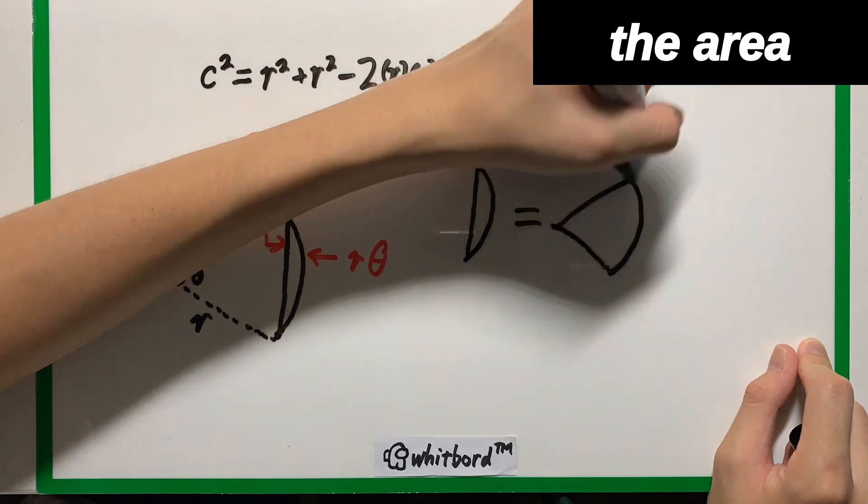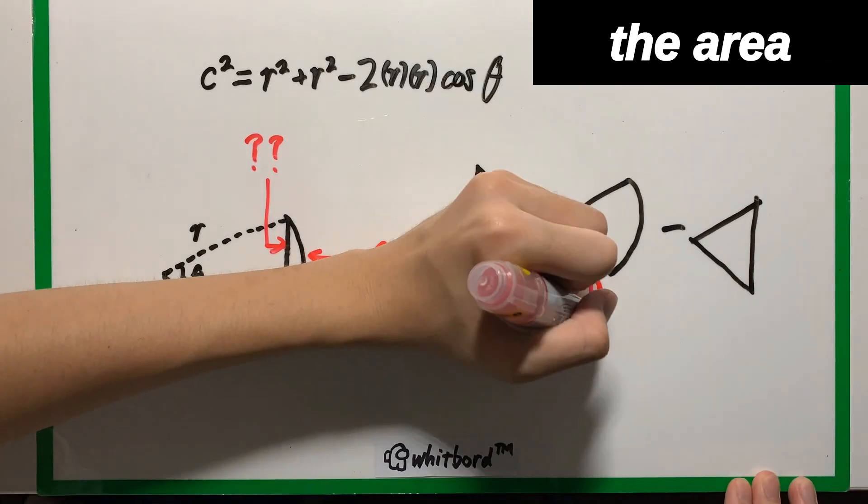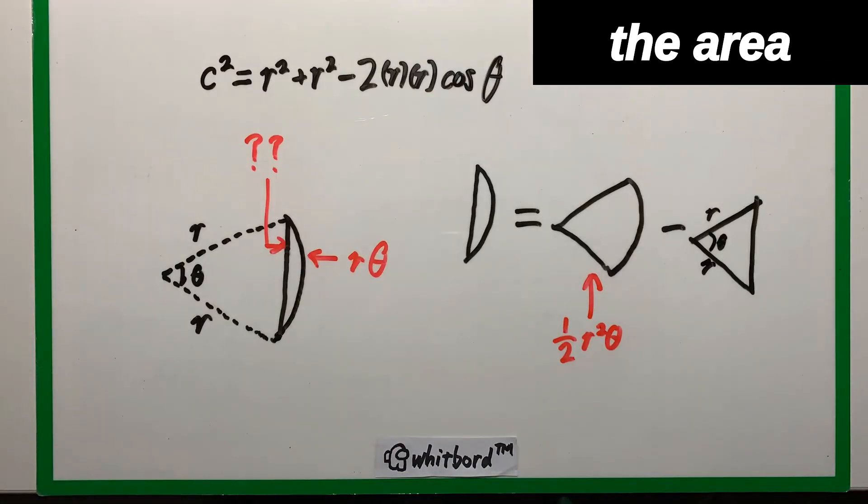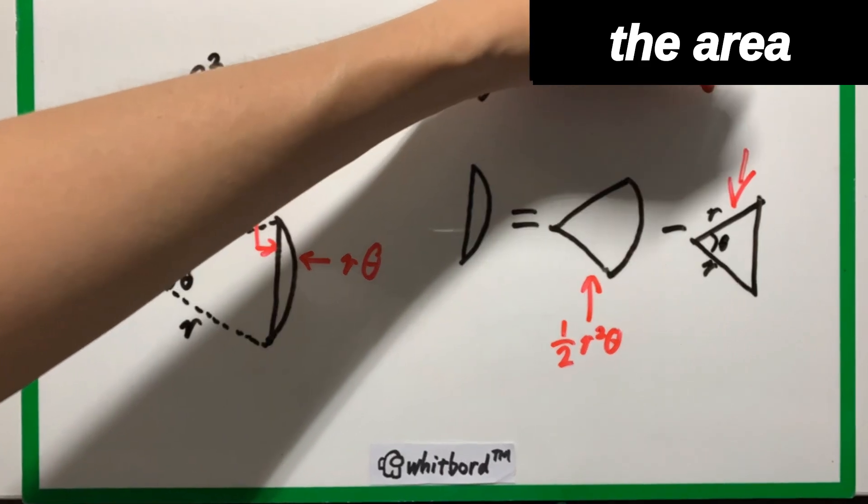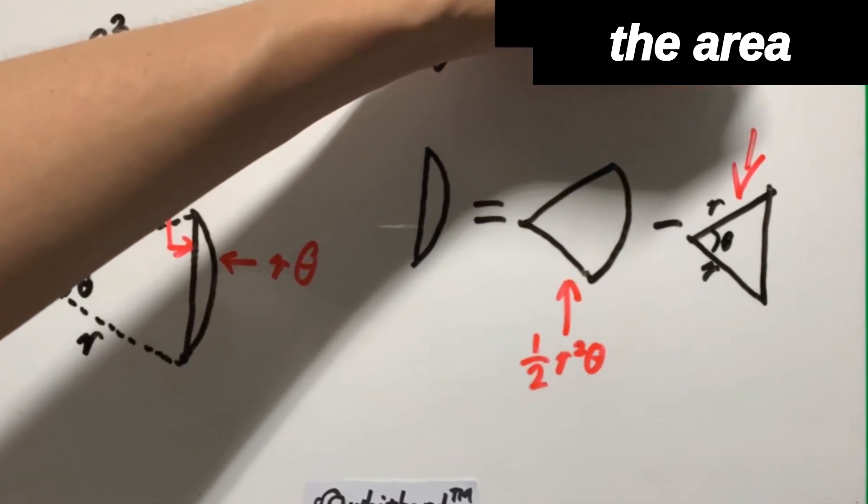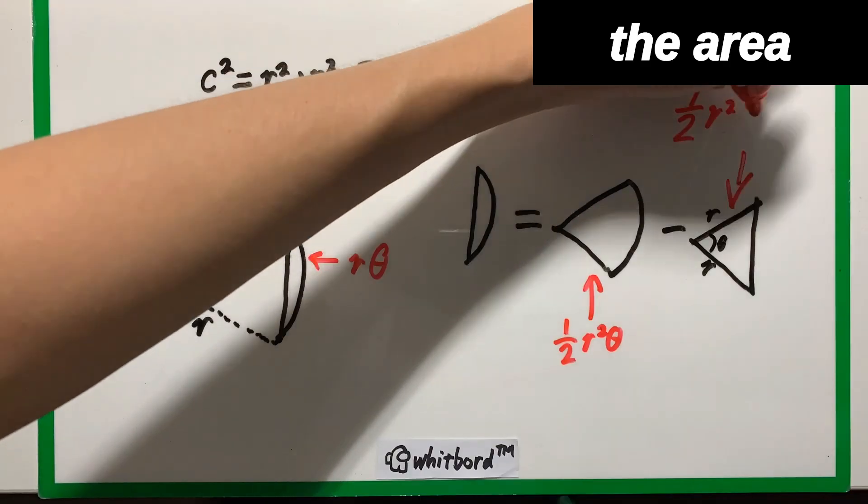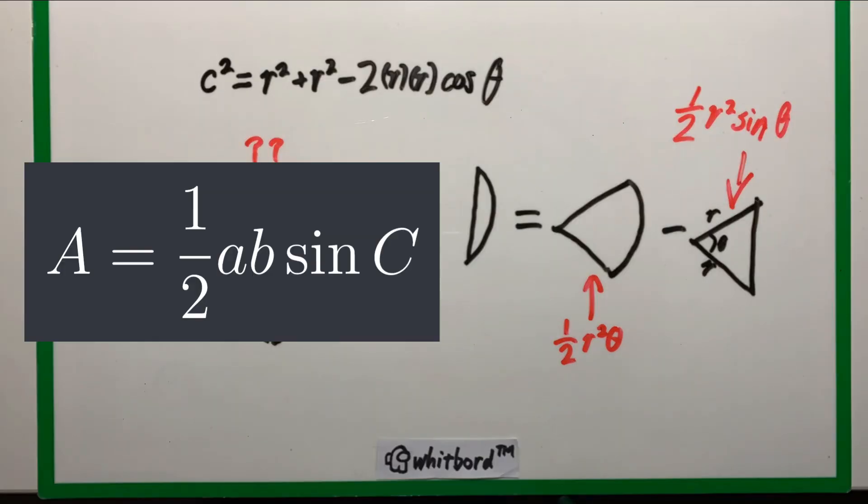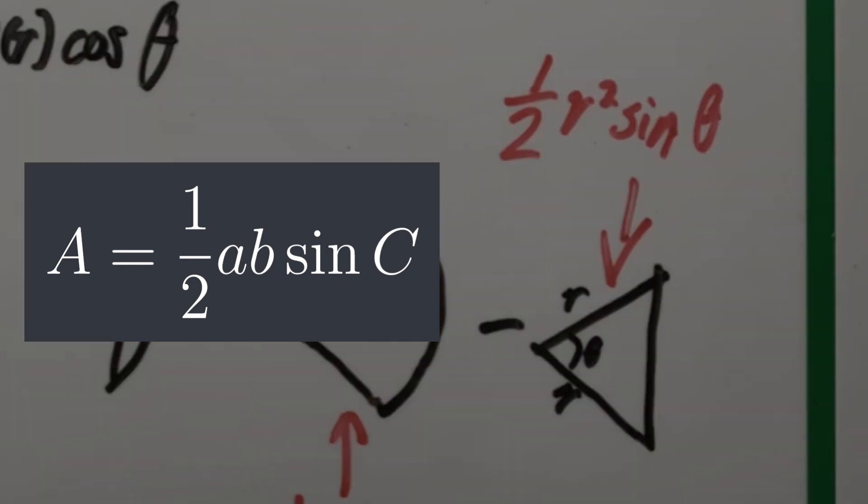You're given the useful information about the area of a sector. So you just need to subtract this triangle from the overall sector. How do you do that? Well, you can use this sine area formula. What do you call this?